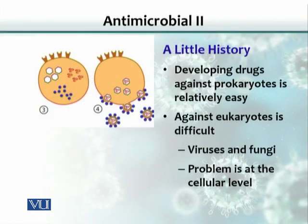Developing drugs generally against prokaryotes is easier than developing antimicrobials against eukaryotes. There are two types of microorganisms. Most abundantly, we see bacteria, for example — they are prokaryotes. And there are some other microbial agents that are eukaryotic in nature, like fungi and protozoa. These are eukaryotic cells.